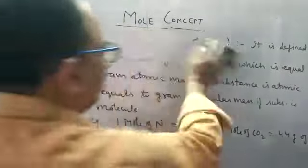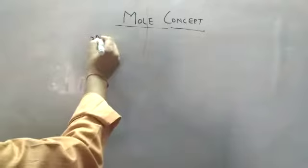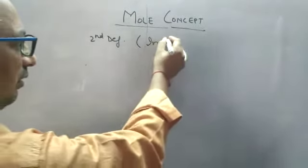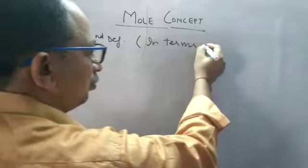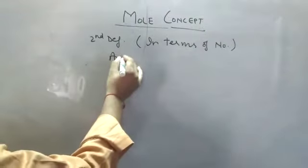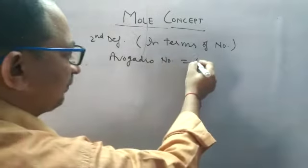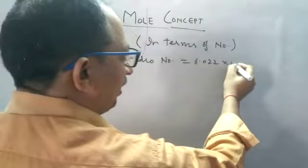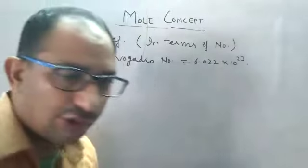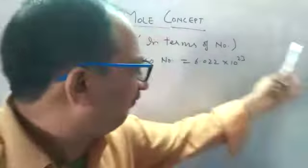Now the second definition — in terms of number. First, let's understand what Avogadro's number is. Avogadro's number means 6.022 × 10²³. One mole represents that quantity of substance which contains Avogadro's number of atoms or molecules.